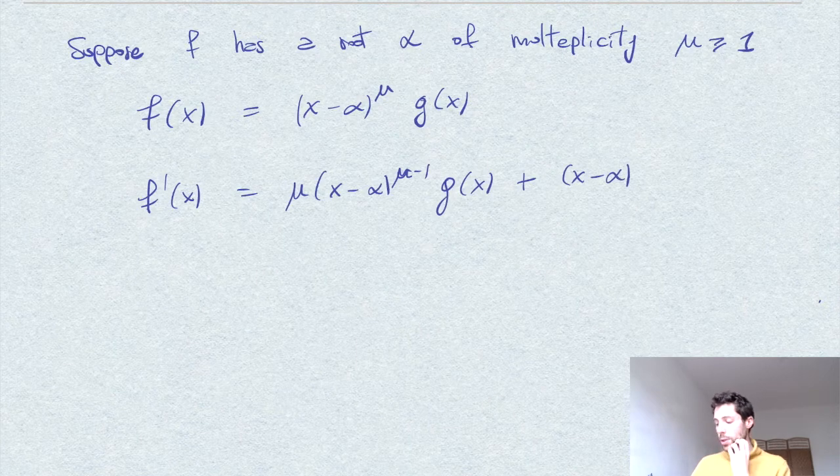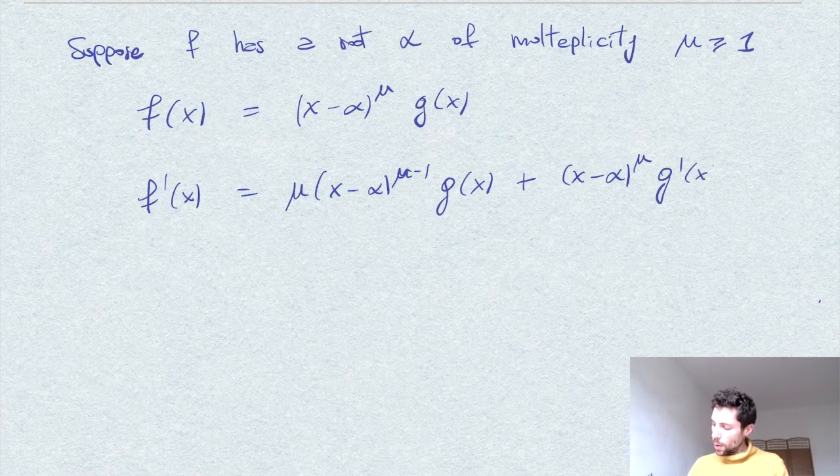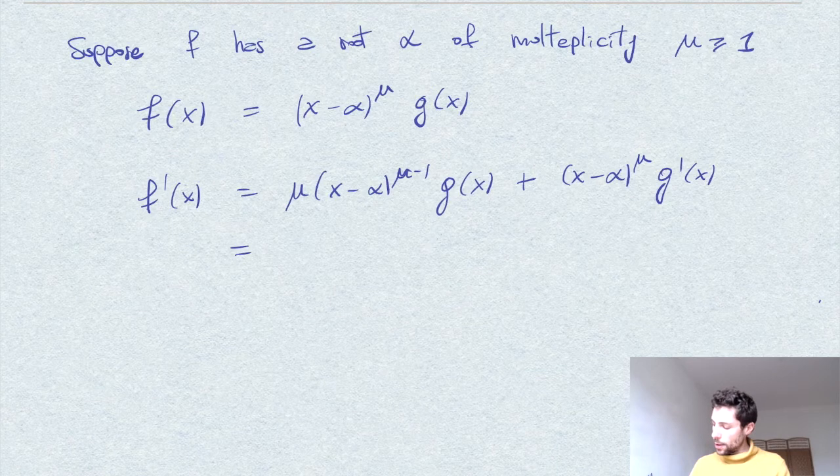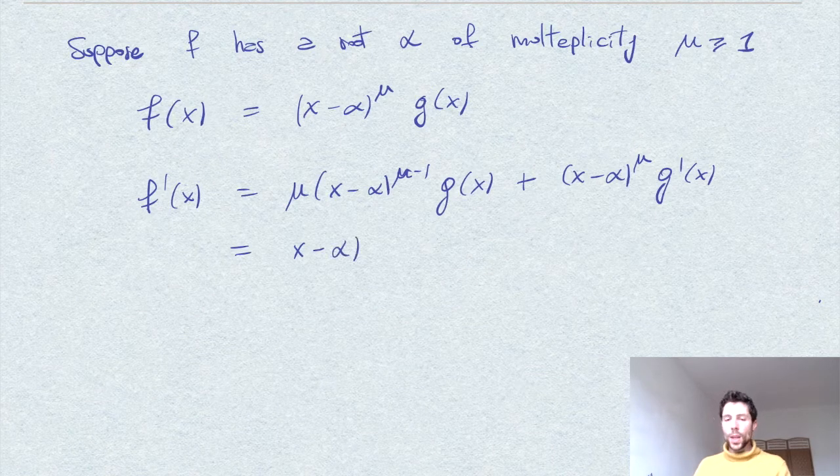minus alpha plus x minus alpha. I'm using the Leibniz rule here. Power mu times the derivative of g. So I can rewrite this by factoring out x minus alpha power.